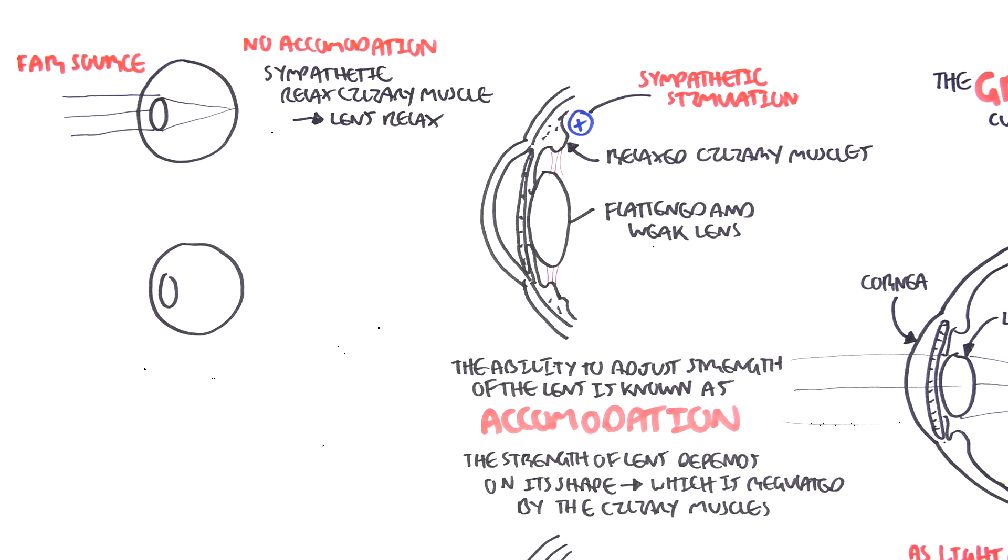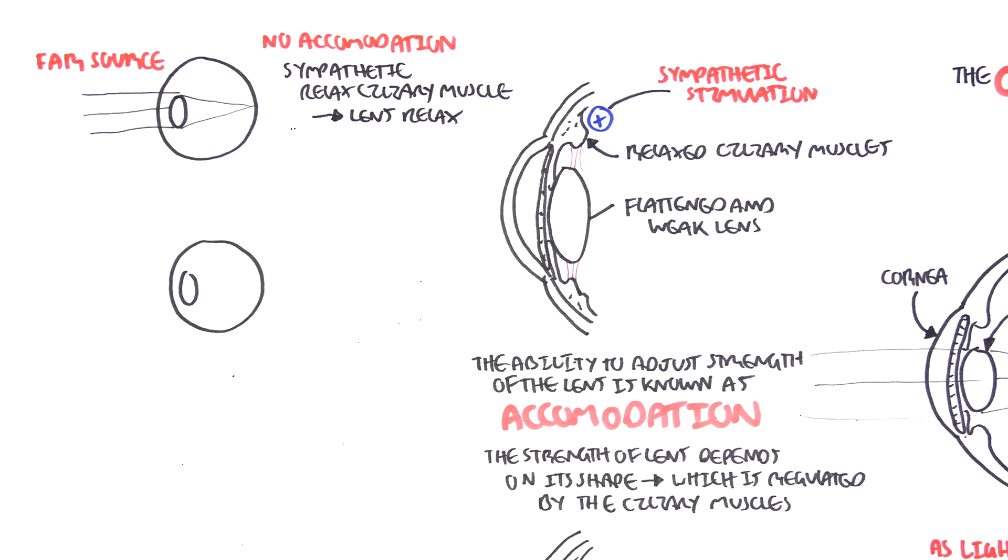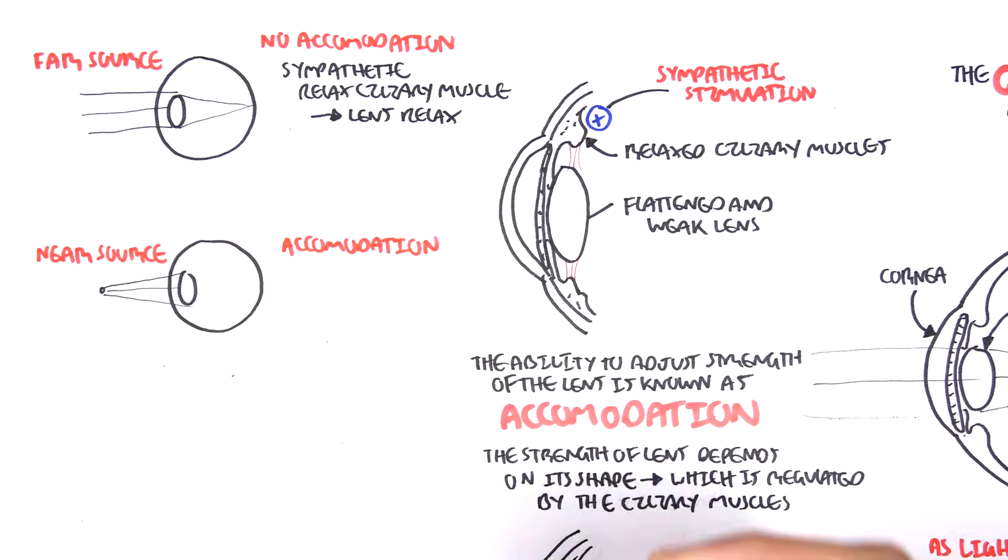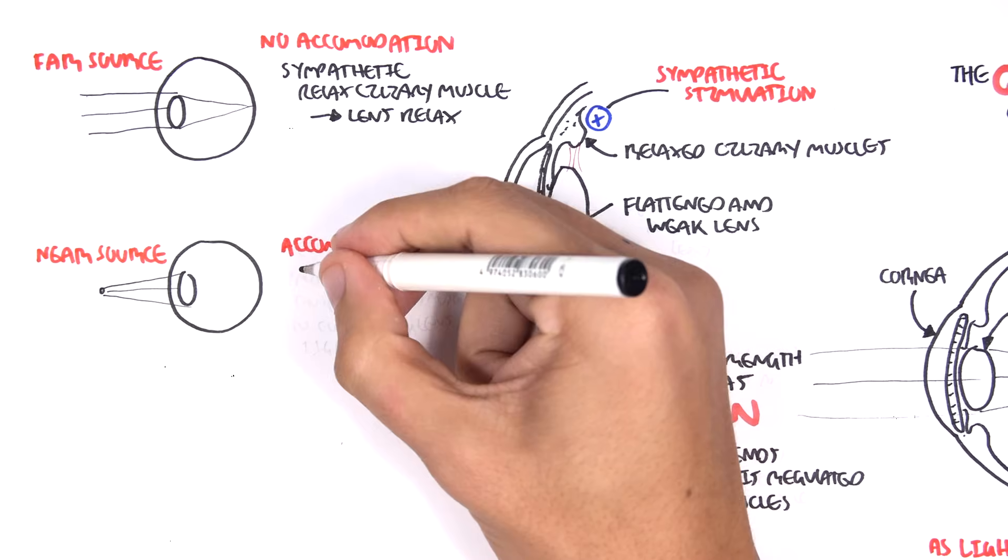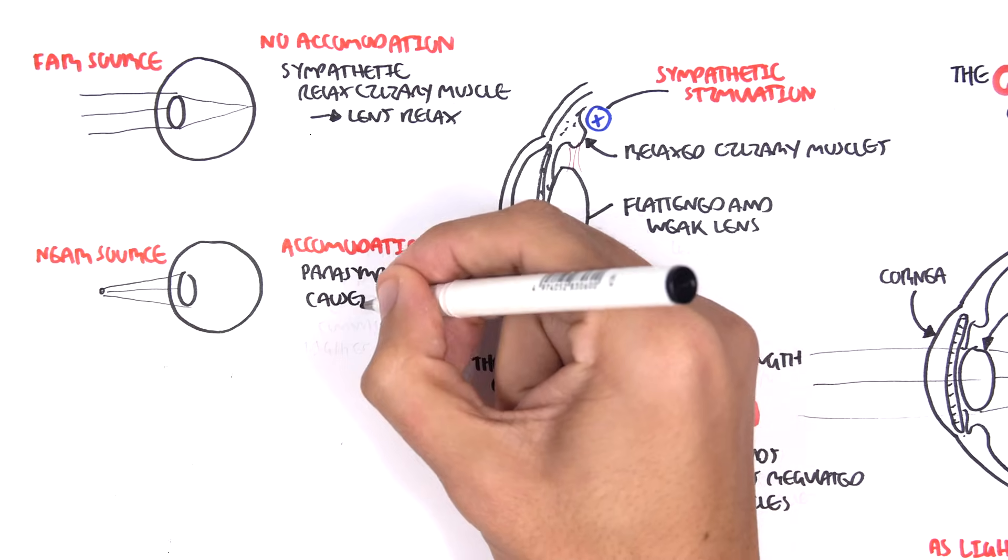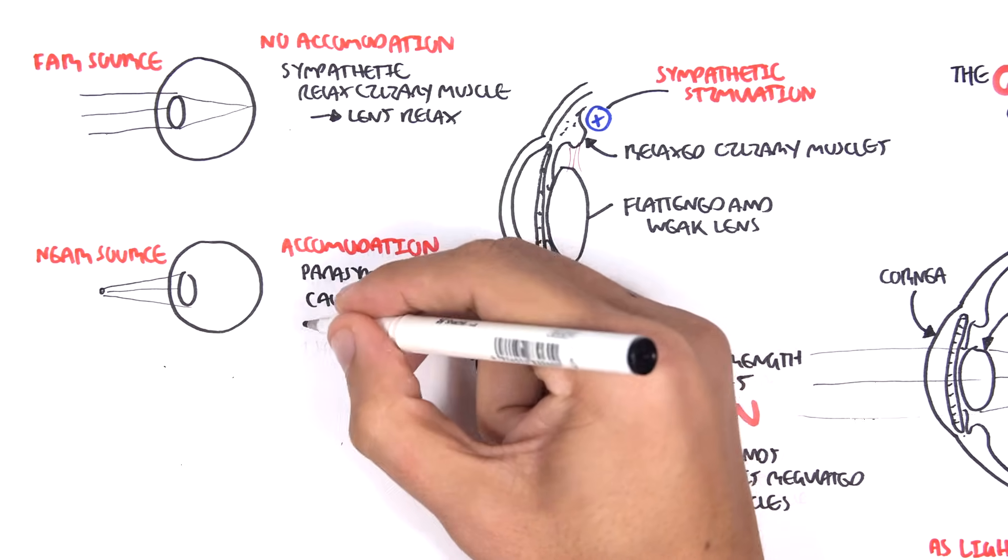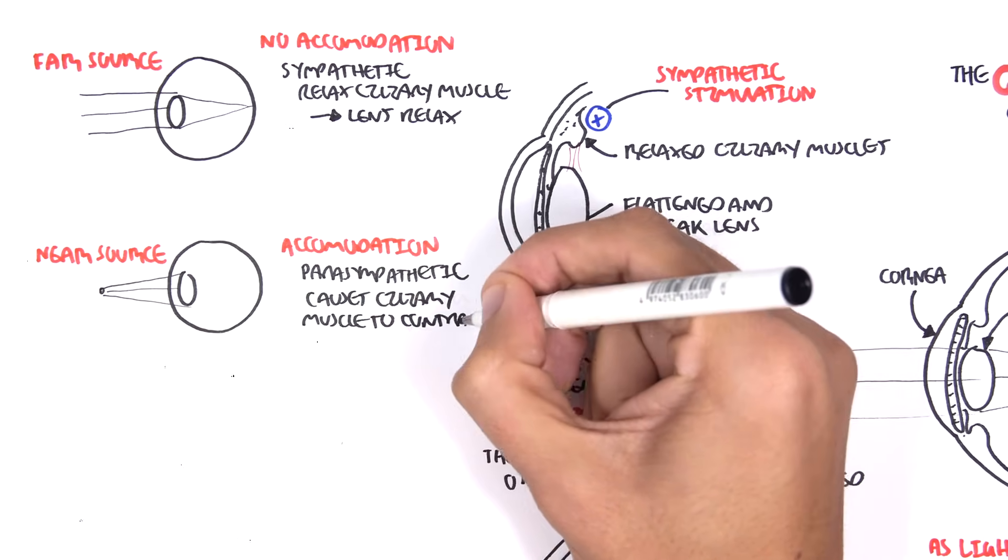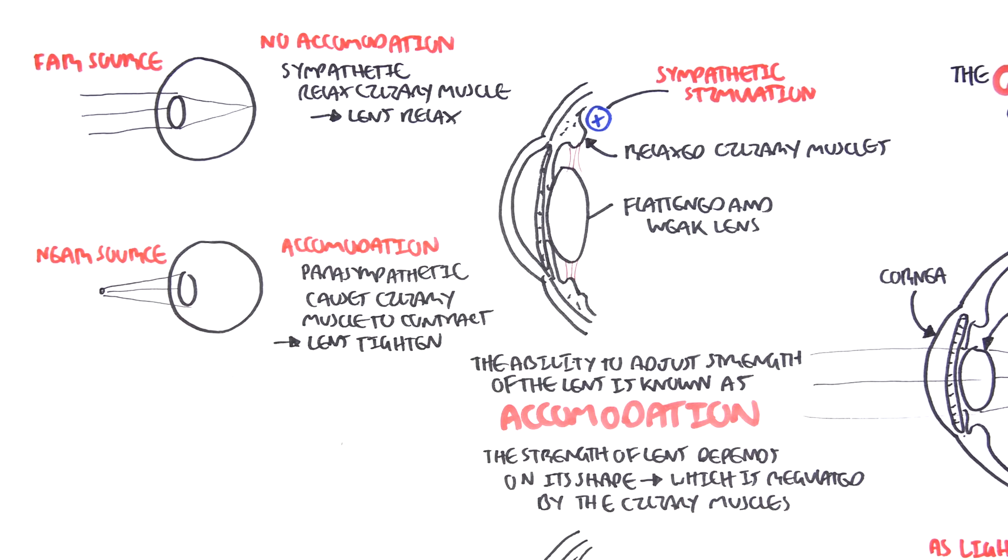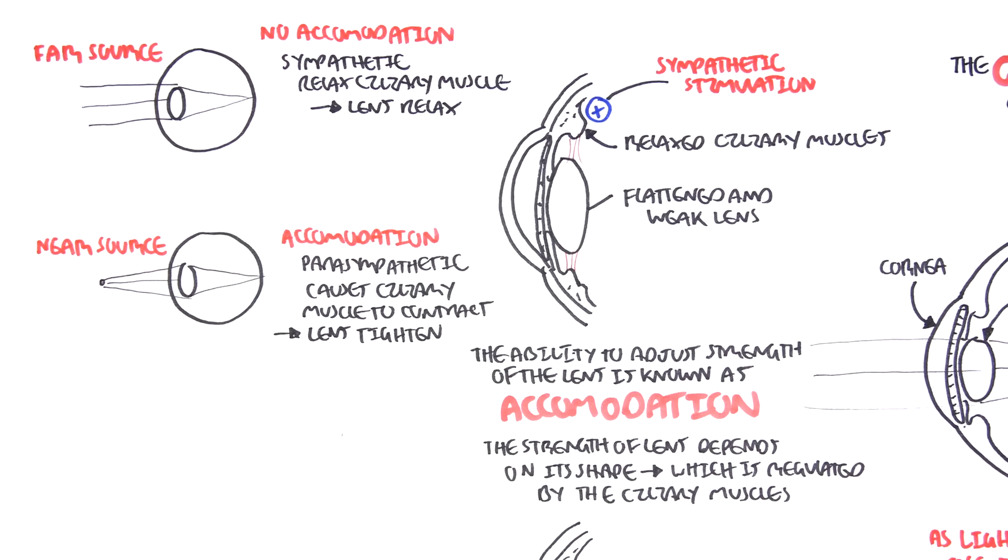However, when your eye focuses on objects close to you, a near source, you need to accommodate. There has to be accommodation. This is where the parasympathetic nerve causes the ciliary muscles to contract and the lens tightens. The light can then be refracted more and thus more focused on the retina.